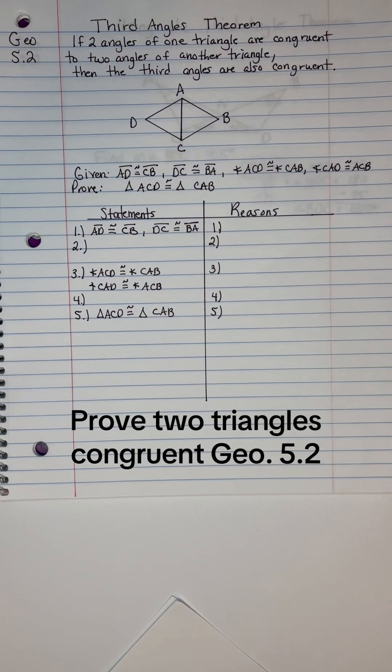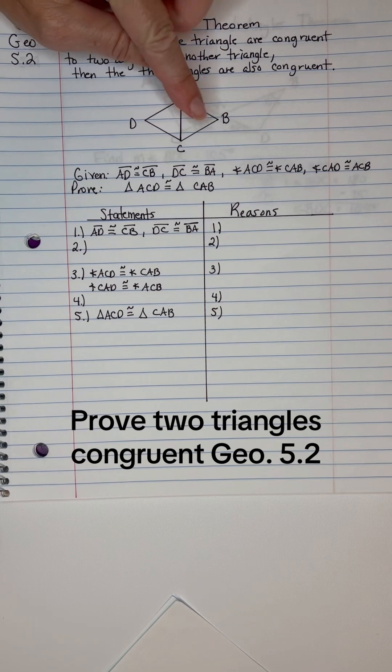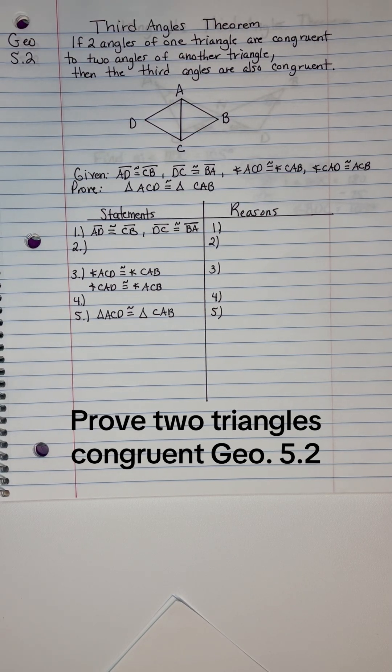We are going to write a proof to prove that this triangle on the left side is congruent to this triangle on the right side.